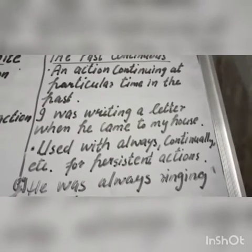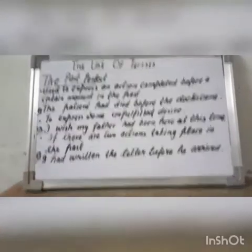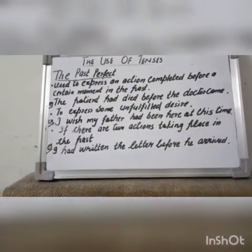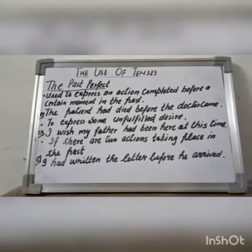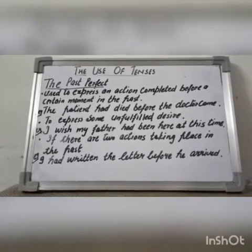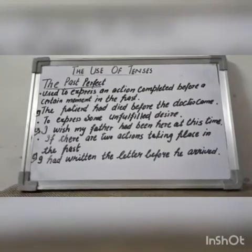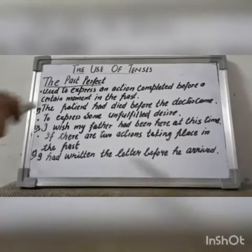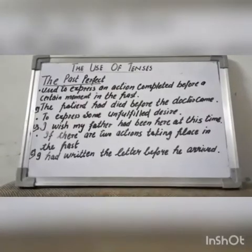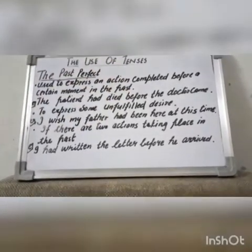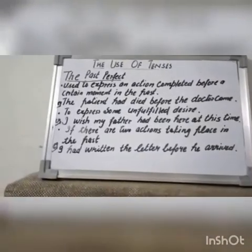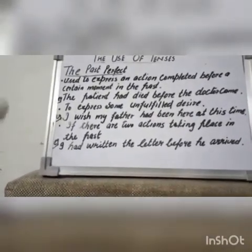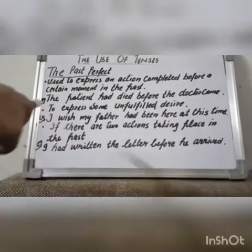Past Perfect Tense: the past perfect is used to express an action completed before a certain moment in the past. It is used whenever we wish to say that some action had taken place before another was begun or completed. For example, 'The patient had died before the doctor came.' This tense is also used to express some unfulfilled desire. For example, 'I wish my father had been here at this time.'